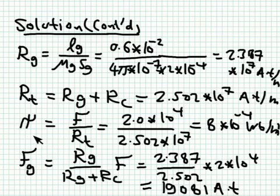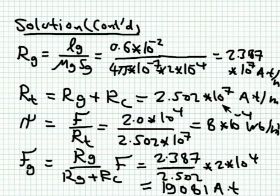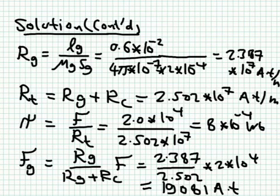The magnetic flux is like current: MMF is the voltage, total reluctance is the resistance. So flux equals MMF divided by total reluctance: 2 × 10^4 divided by 2.502 × 10^7 equals 8 × 10^−4 webers. This is in webers, not webers per meter squared, since this is total flux not flux density.